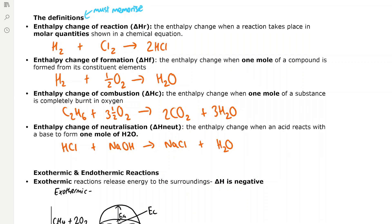We have some definitions that we need to memorise. The first is the enthalpy change of reaction, which is the enthalpy change when a reaction takes place in the molar quantities shown in a chemical equation. For example, if hydrogen reacts with chlorine, it forms 2 moles of HCl, and the enthalpy change of this reaction is measured when it occurs in the molar quantities shown in the chemical equation.